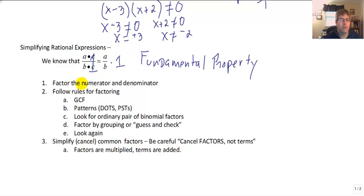So when we simplify a rational expression, our process will be to factor the numerator and the denominator. And in doing that, we're going to follow our rules for factoring. We're going to look for a greatest common factor, we'll take that out. We'll look for our patterns: difference of two squares, perfect square trinomials, and factor that. Or we'll look for a pair, an ordinary pair of binomial factors.